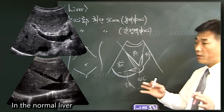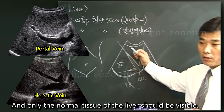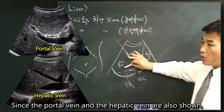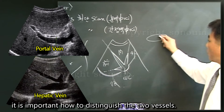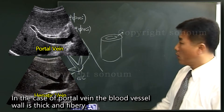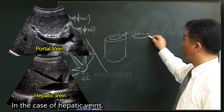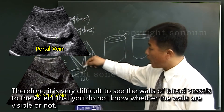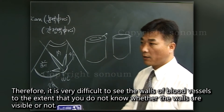In the normal liver, the portal vein and hepatic veins, and only the normal tissue of the liver should be visible. Since both the portal vein and the hepatic vein are shown, it is important to know how to distinguish the two vessels. In the case of the portal vein, the blood vessel wall is thick and fibrous, so it is very bright. In the case of hepatic veins, the blood vessel wall is very thin and there is not much fiber, making it very difficult to see the walls of blood vessels — to the extent that you do not know whether the walls are visible or not.